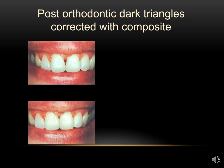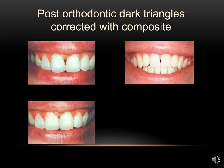In this next case, the teeth were moved bodily together as they should be, but the shape of the tooth created a dark triangle because the mesial surface, which normally is convex, was in this case concave. Again, we can easily correct this with a little bit of composite placed properly.